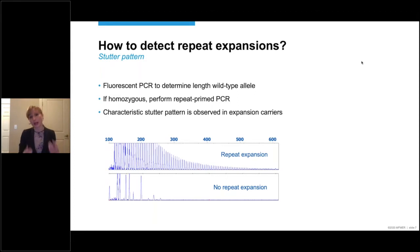A repeat-primed PCR is a special PCR with three primers, two primers on both sides of the repeat, one of which recognizes the repeat itself, and a third primer, a linker primer, that can boost the amplification. When you use a repeat-primed PCR and an expansion is present, you see this characteristic stutter pattern, as shown here on this slide, which is absent if no C9ORF72 repeat expansion can be detected.